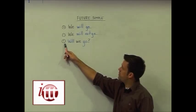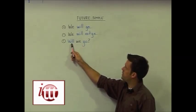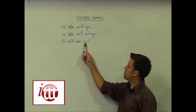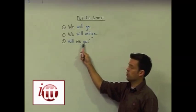To create the question, again we invert our words, so 'will' begins the question. We keep our subject after that and use the main verb in its base form: 'Will we go?'